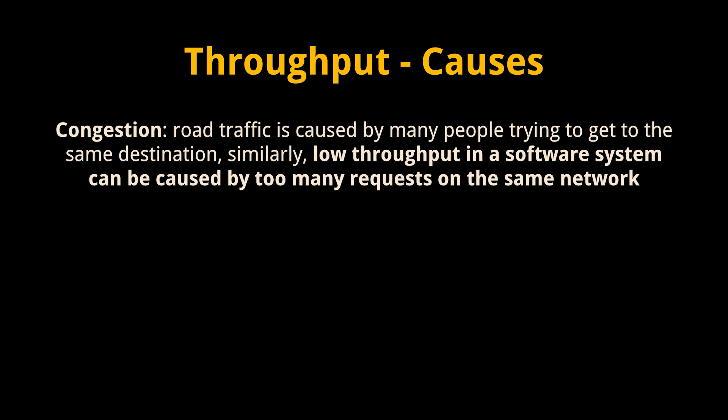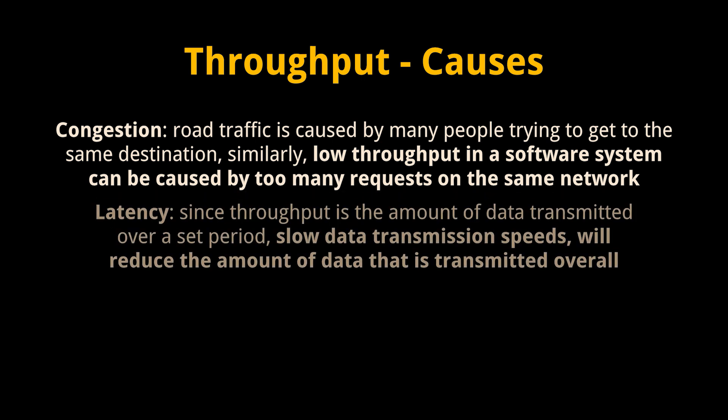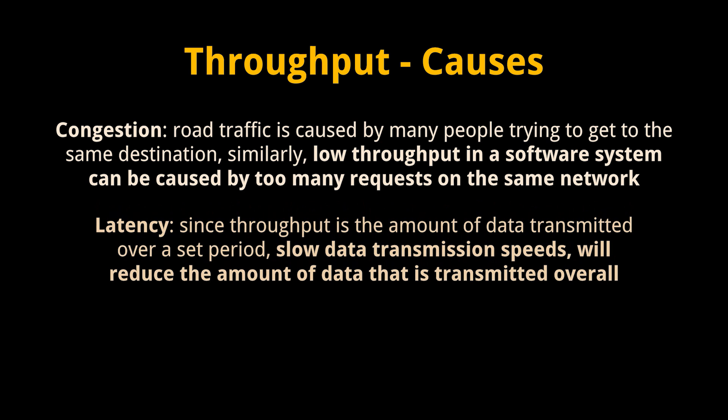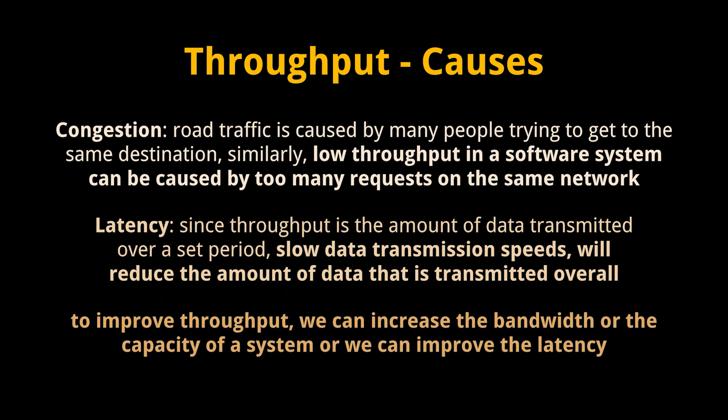Latency is how long it takes you to drive from A to B, bandwidth is how wide the roads are, and throughput is how many cars are on the road right now. Just like latency, congestion plays a big factor in low throughput. Low throughput in a software system can be caused by too many requests on the same network — essentially the hardware can't handle the number of requests going through it. Since throughput is the amount of data transmitted over a set period, high latency will reduce the amount of data transmitted overall. To improve throughput, we can increase bandwidth or improve latency.